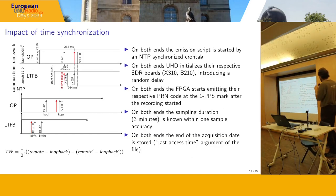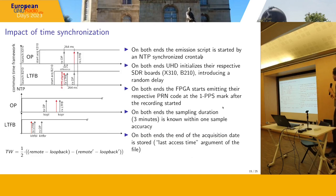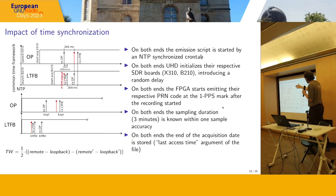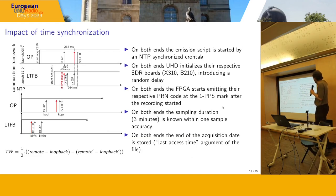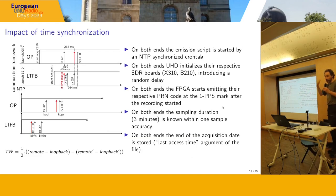If the flip bit lands right in between two code periods, the energy will not accumulate coherently and you'll have a poor signal-to-noise ratio. So as Claudio mentioned, you must ensure that you properly align your local code — using the classical prompt, early, and late feedback loop on your code position.